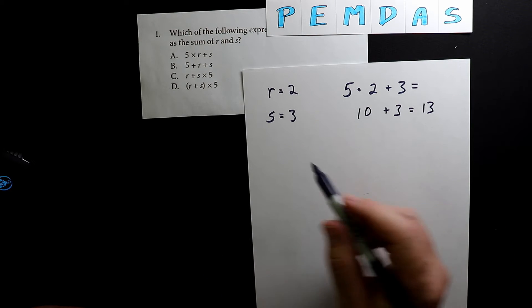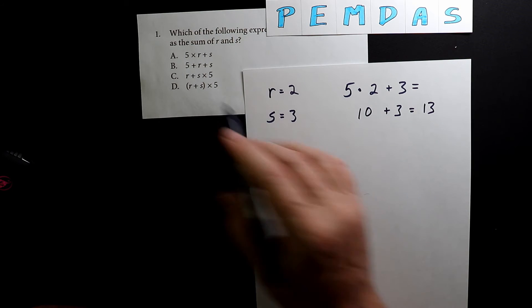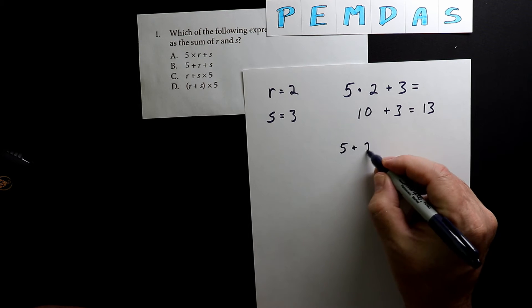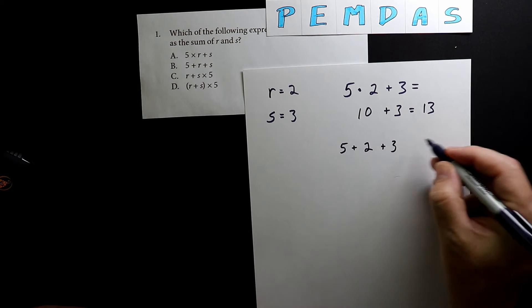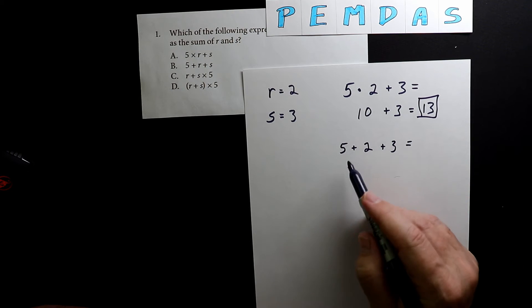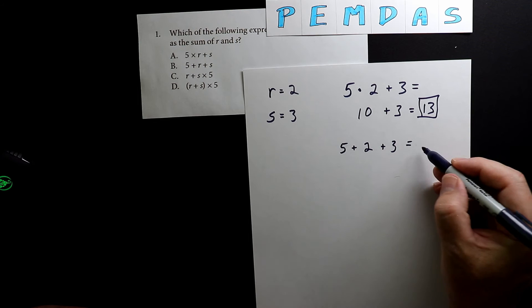Let's do the second one, even though we know it can't be the right answer. This is the same as 5 plus 2 plus 3. Five plus 2 is 7, and 7 plus 3 is 10.